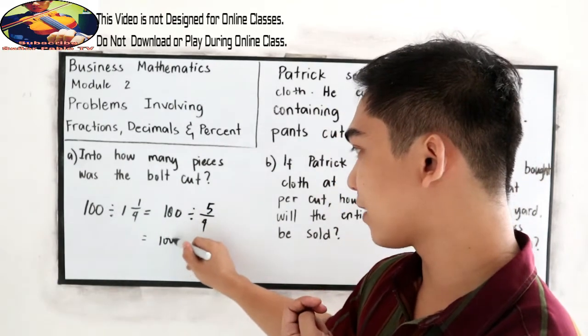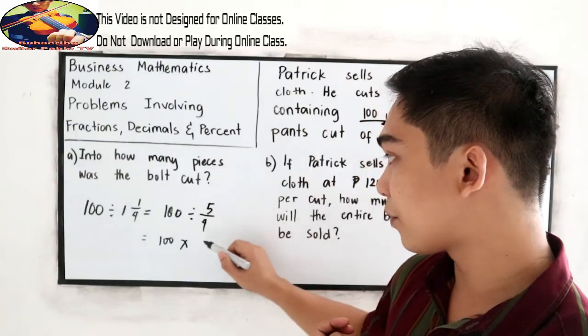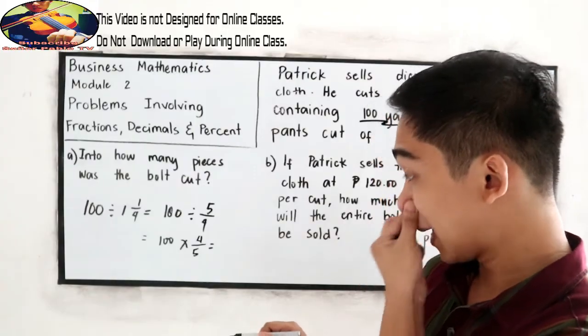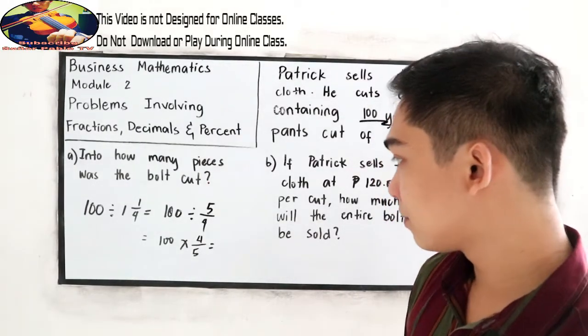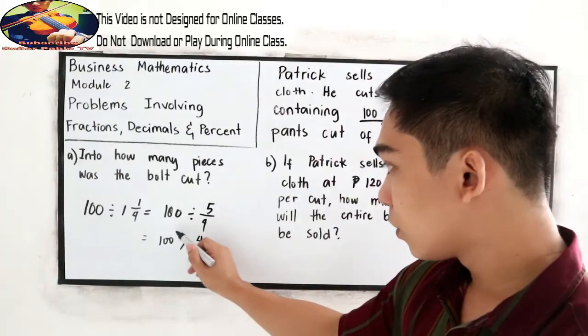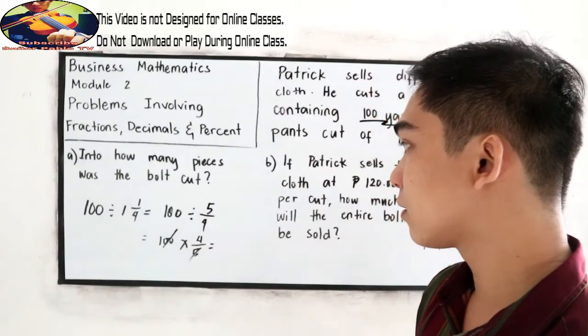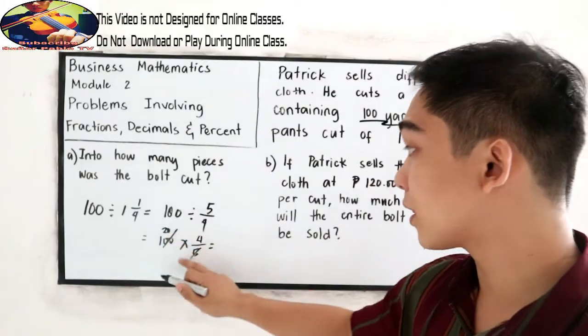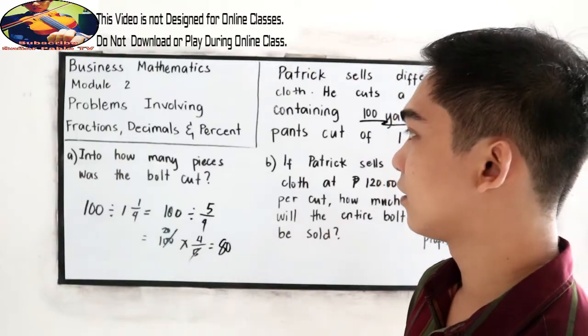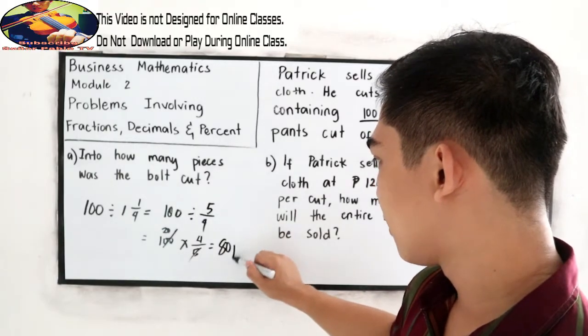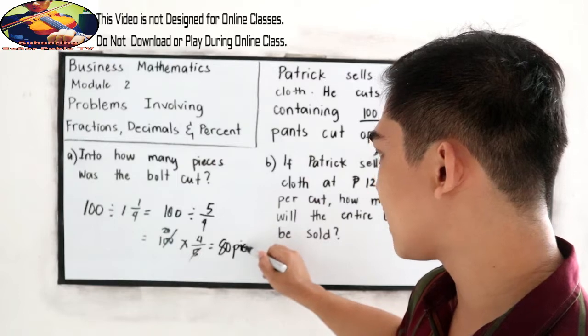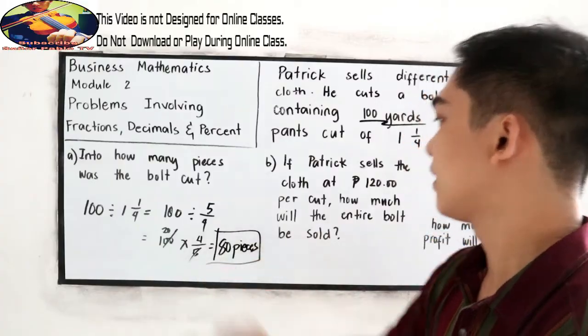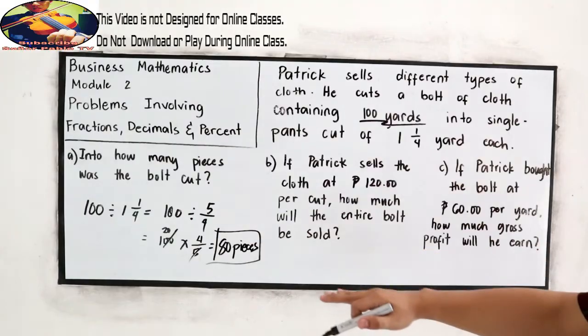We have 100 times the reciprocal of 5/4, which becomes 4/5. Using cancellation method, 100 divided by 5 is 20. Now 20 times 4 is 80. So we have 80 pieces.